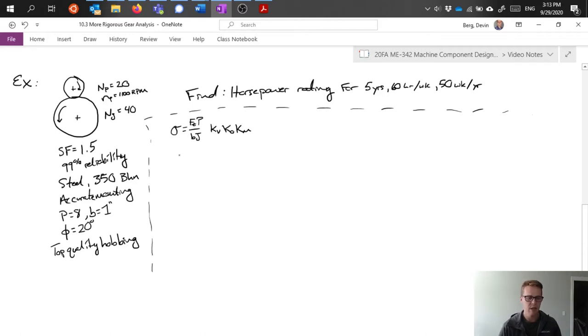Let's start with the factors. The first is the velocity factor, kV. But in order to know the velocity factor we need to get the pitch line velocity. Pitch line velocity is equal to pi dn over 12. We actually weren't given the diameter. But we can calculate that because we know the pitch and we know the n value. If we rearranged our pitch equation we'd see that diameter equals n over p.